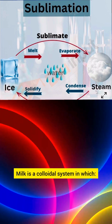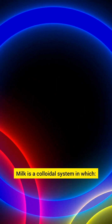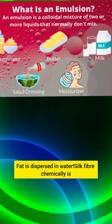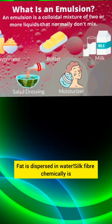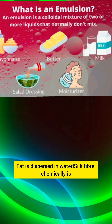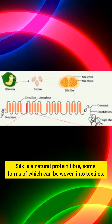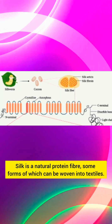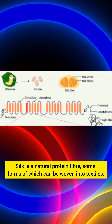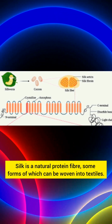Milk is a colloidal system in which fat is dispersed in water. Silk fiber chemically is: silk is a natural protein fiber, some forms of which can be woven into textiles.